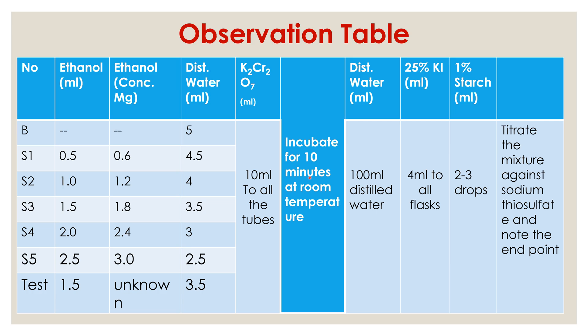After 10 minutes, take conical flasks, add 100 ml of distilled water to each, and pour in the respective test tube mixture. Then add 4 ml of potassium iodide to each conical flask, followed by 2 to 3 drops of starch solution as an indicator. Titrate the mixture against sodium thiosulphate and note the end point.